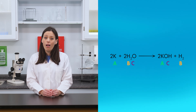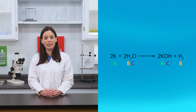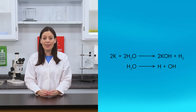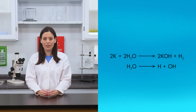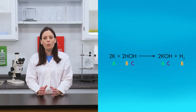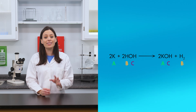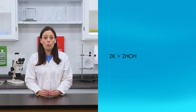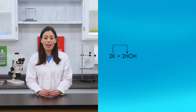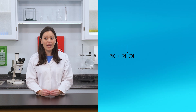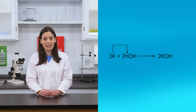Single replacement also takes place when potassium reacts with water. In certain chemical reactions, water molecules break up into hydrogen and hydroxide ions. To help you visualize how single replacement takes place in this reaction, we rewrote the chemical formula of water as HOH. When potassium reacts with water in this single replacement reaction, a potassium ion replaces the hydrogen ion. Potassium ions bond with hydroxide ions to produce potassium hydroxide.